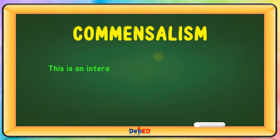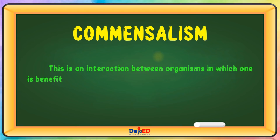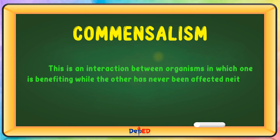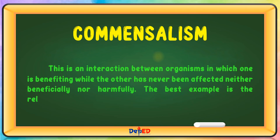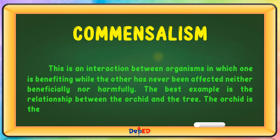Commensalism is an interaction between organisms in which one is benefiting while the other has never been affected, neither beneficially nor harmfully. The best example is the relationship between the orchid and the tree. The orchid is the only one being benefited from the tree.